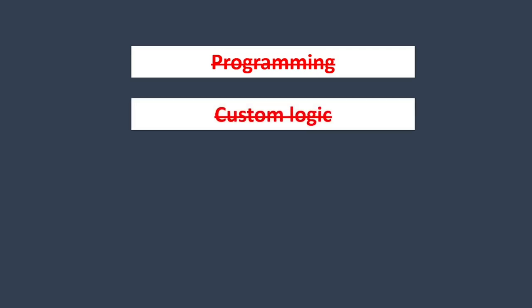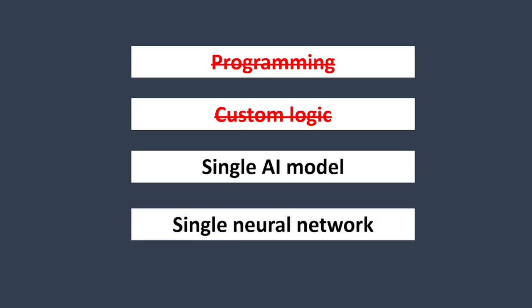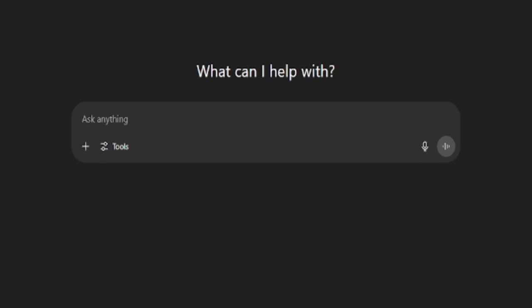No layers of custom logic for every possible situation. It's just one single AI model, one neural network, that's been trained end-to-end. This model receives raw camera images as input and outputs actions directly. It's the same idea that made large language models like ChatGPT work so well, but now it's happening in the physical world. And that's a huge deal.